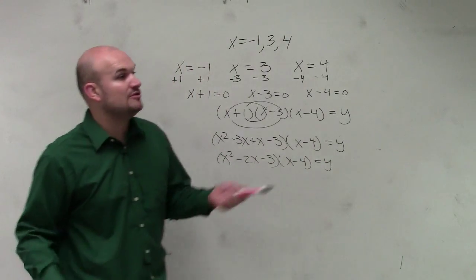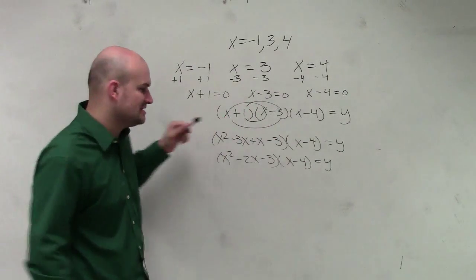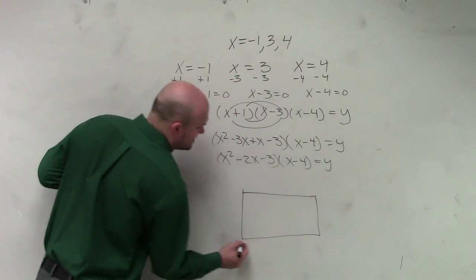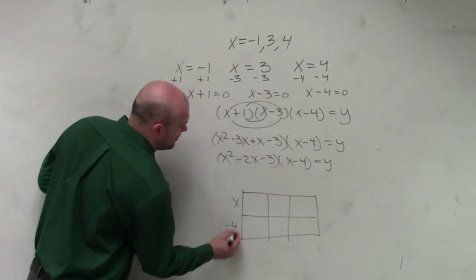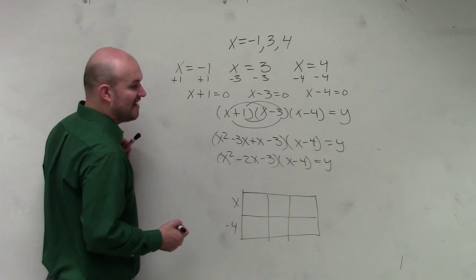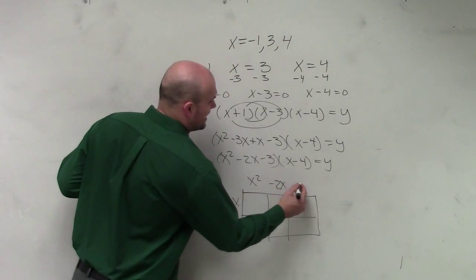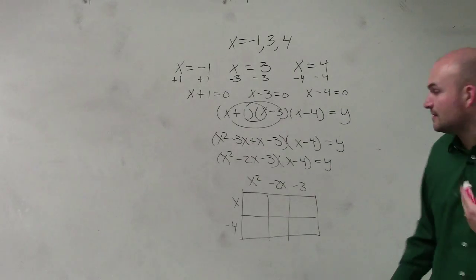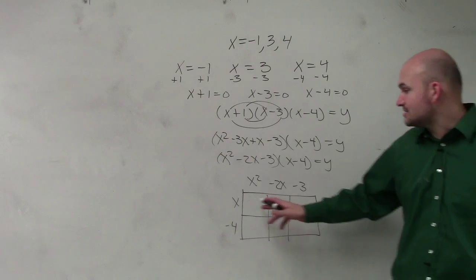Now, you can do distributed property again using the foiling technique. However, I prefer, whenever I'm dealing with something greater than a 2 by 2, to create a box. I'll put one factor on one side and the other factor on the other side, and have the terms of the factors represent the length and width of a box. Now I simply need to multiply to find the area of each box.